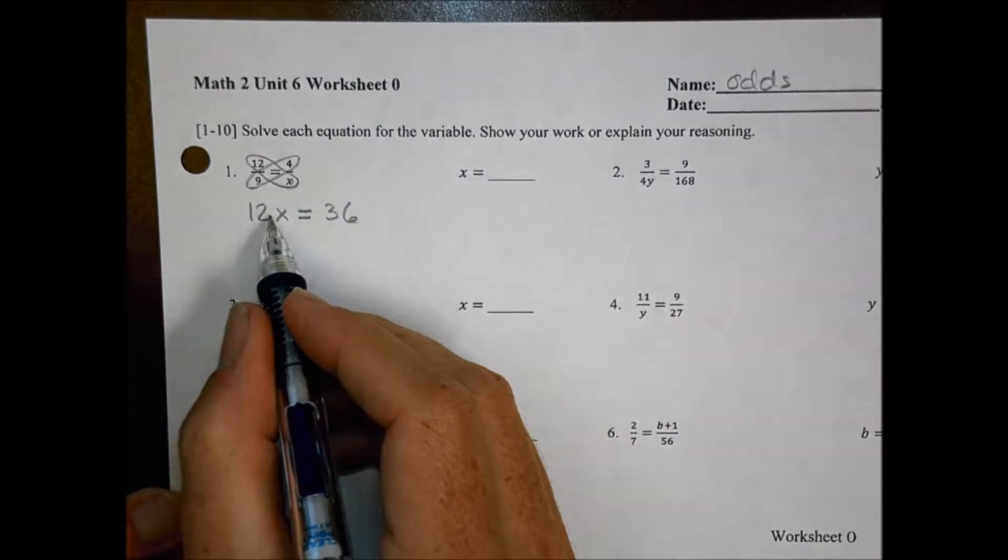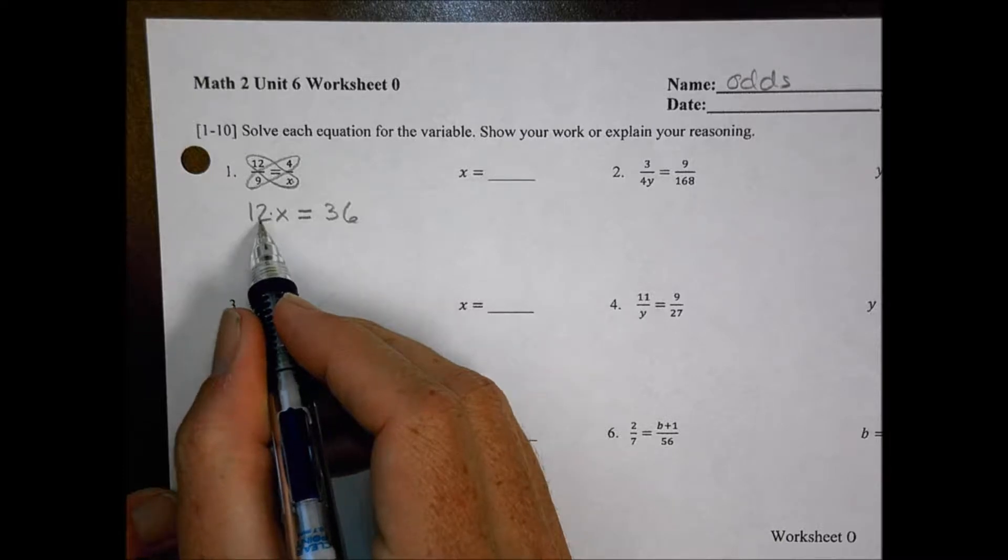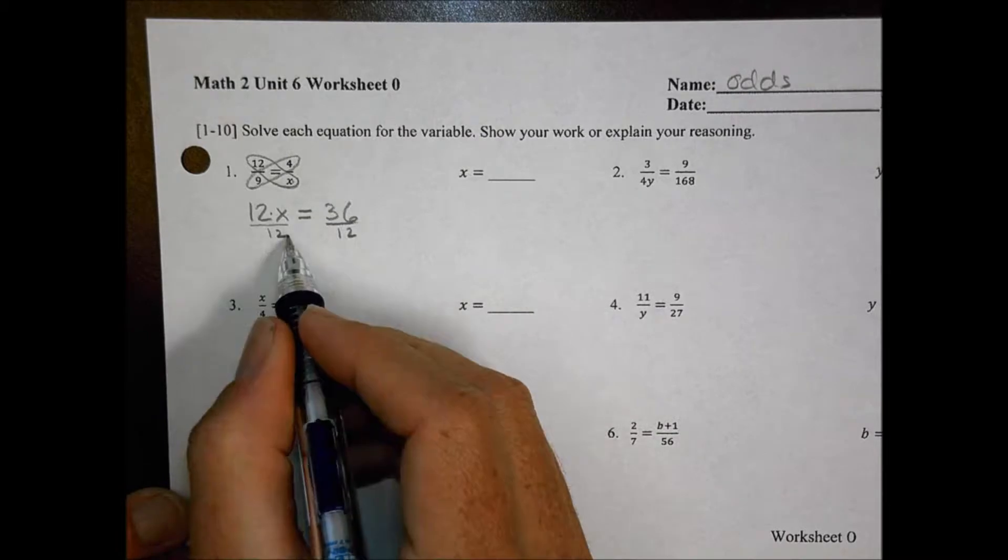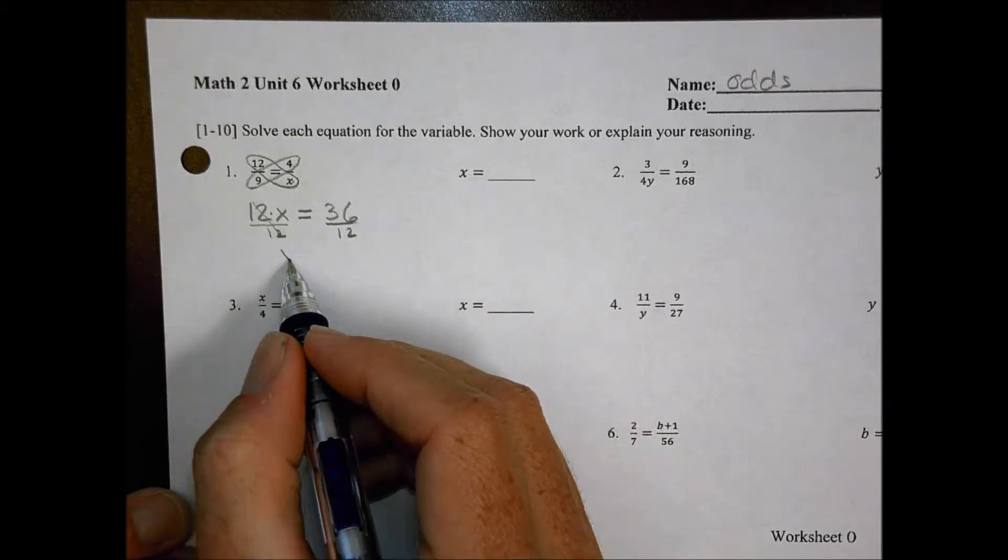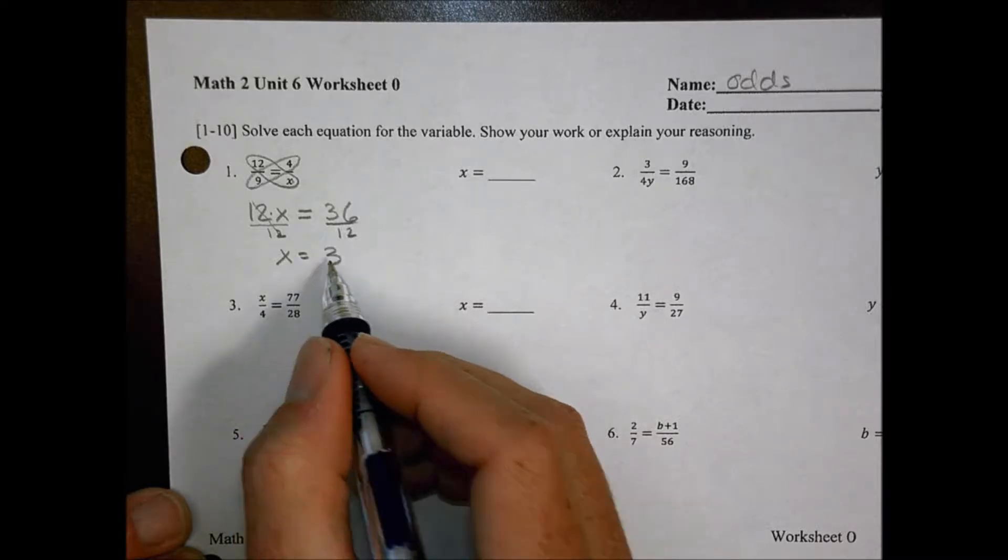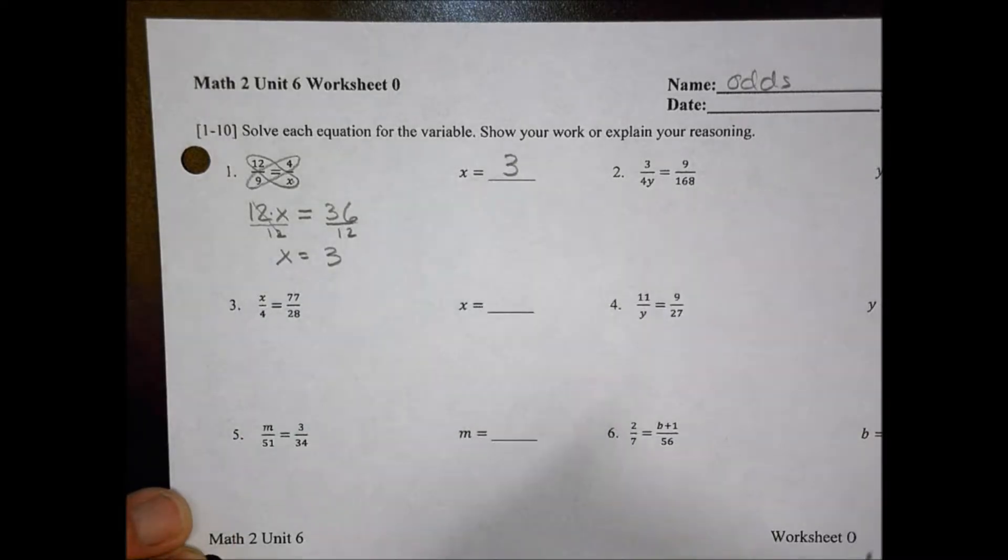To get the x by itself, I know they're joined together by multiplication, so I will do the opposite, which is divide both sides by 12. 12 over 12 becomes a 1, so I'm left with just an x on this side, and 36 divided by 12 is going to be 3, for a solution of x equals 3.